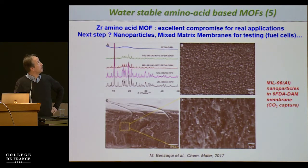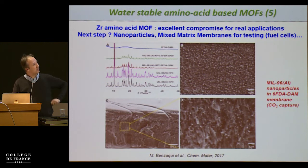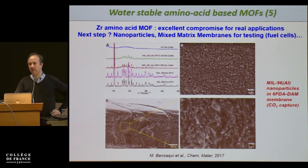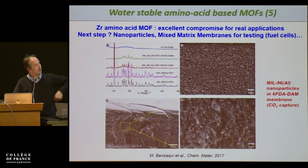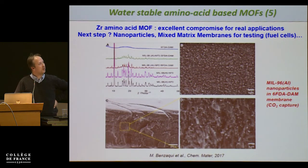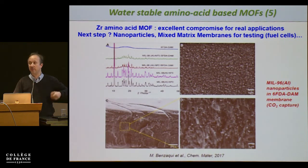This material has almost the same conductivity value as Nafion, the commercial polymer, and is much easier and cheaper to produce than the toxic chromium materials reported before. The next step is to make nanoparticles of this MOF and incorporate them into mixed matrix membranes with polymers — an approach we have already demonstrated with an aluminum carboxylate MOF and a 6FDA polymer for CO2 capture.